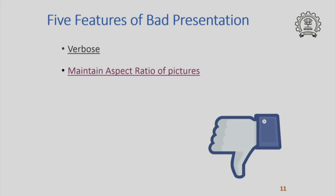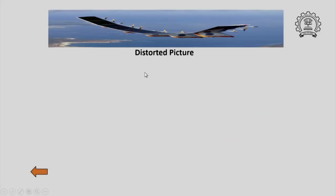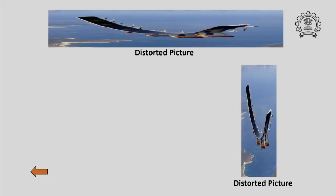Another common mistake that people do is when they want to fit some figures or pictures onto a slide, they resize them to suit their convenience. For example, this is a picture which was there in a presentation — it is a distorted picture. One could also shrink it and put it in this fashion.